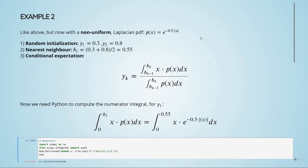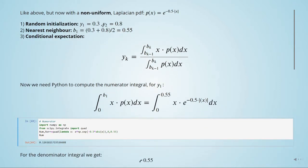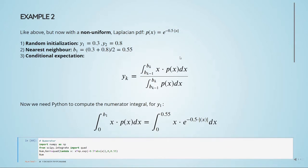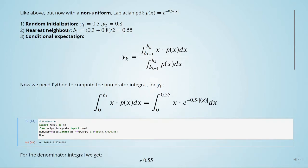We will do the same thing. We will randomly initialize values of y1 and y2, so it will be 0.3 and 0.8, and we will calculate the nearest neighborhood rule. So we have B1, which is like the average between these two values. We have this, but now our conditional expectation, we have to take into consideration the PDF of the Laplacian distribution.